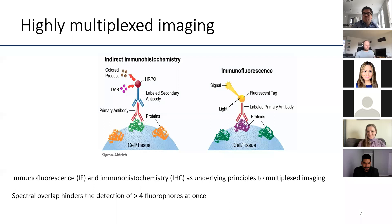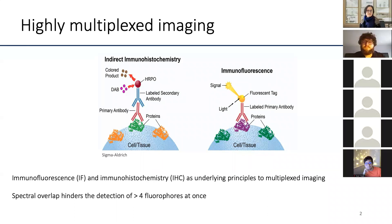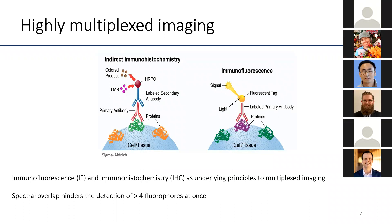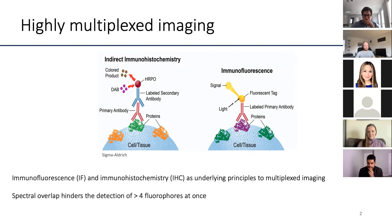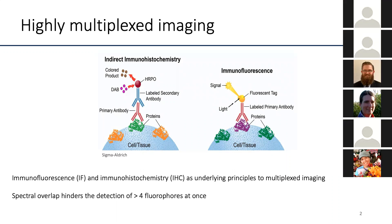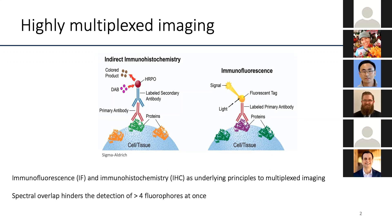I'll start with a quick introduction to multiplexed imaging. The concepts we're using come from classic visual imaging. You may be familiar with immunofluorescent imaging and immunohistochemistry, where you have either fluorescently labeled primary or secondary antibodies, or antibodies labeled with an enzyme that creates a visual readout.